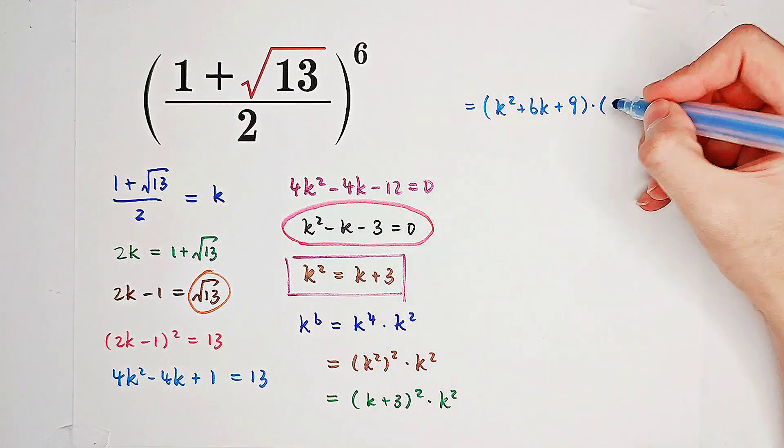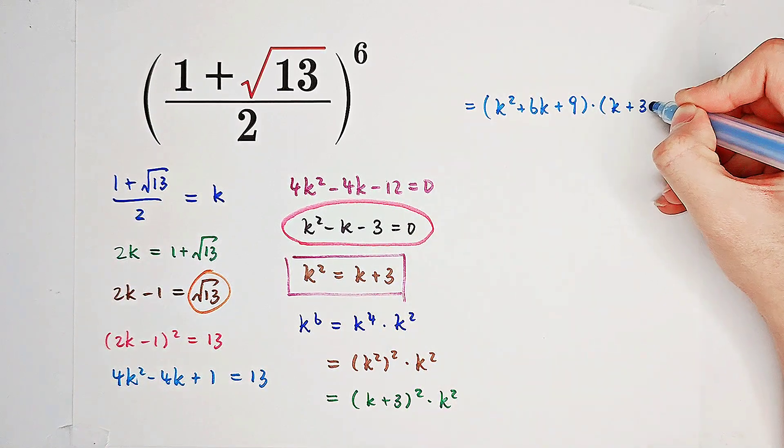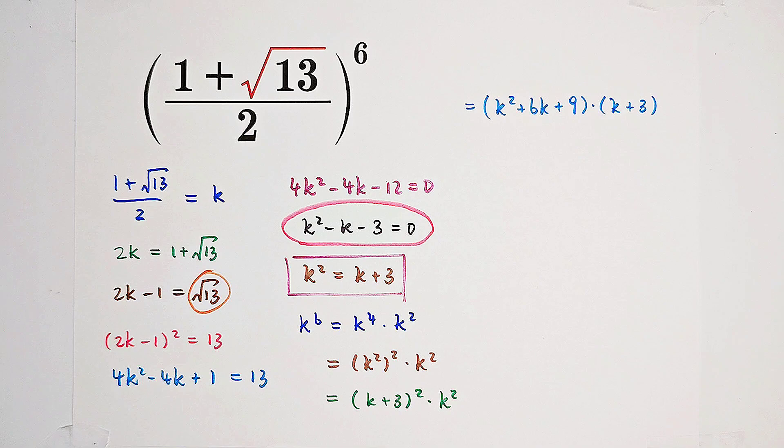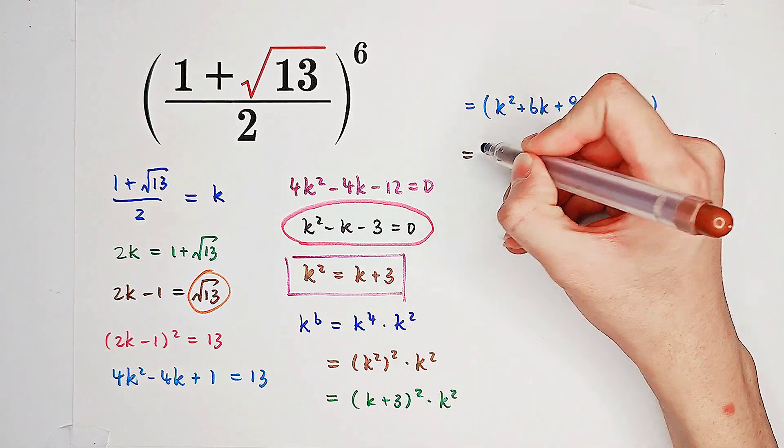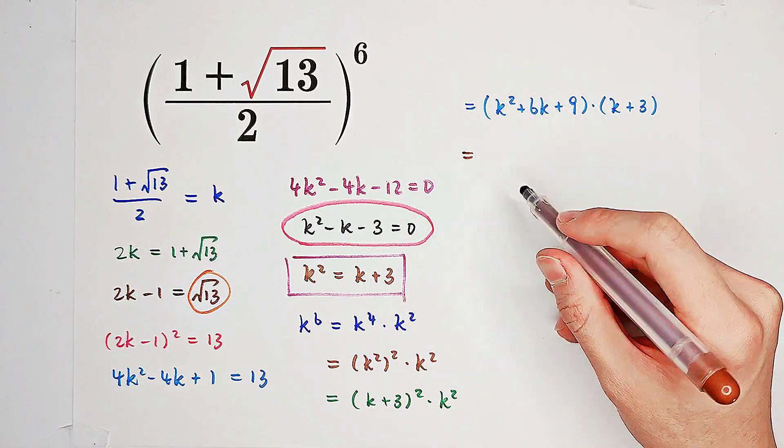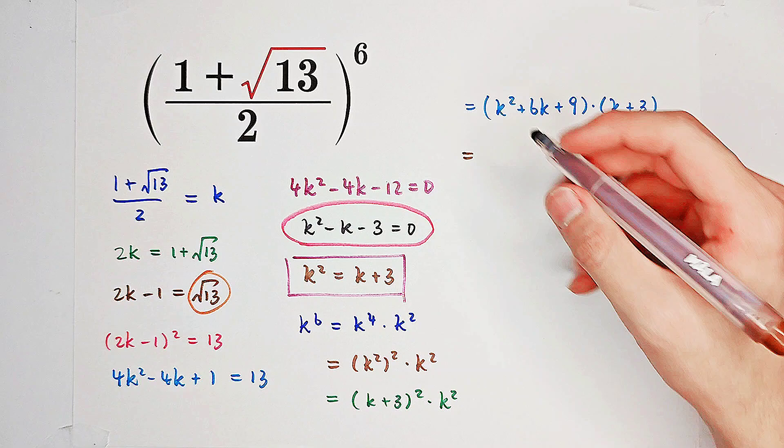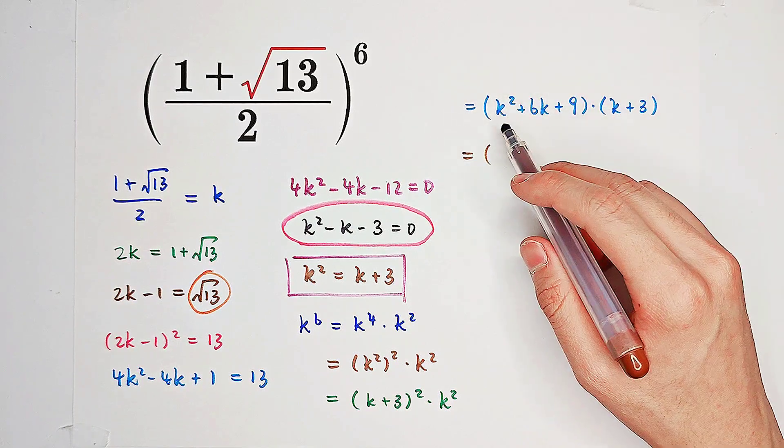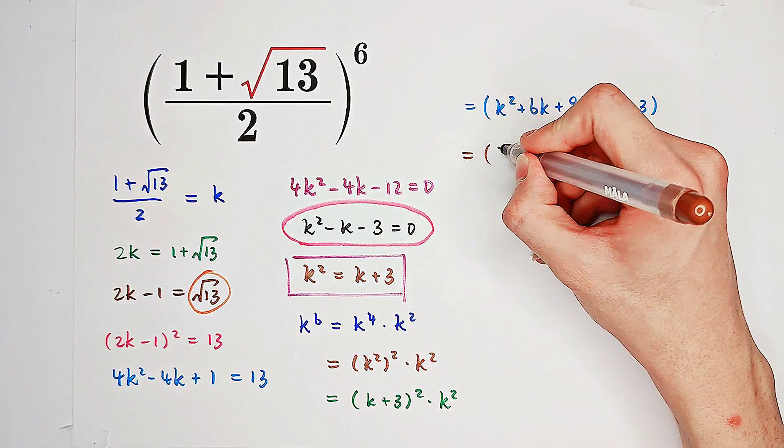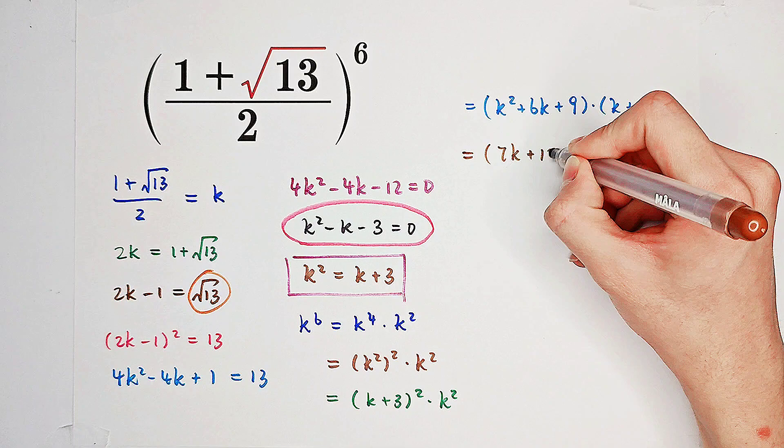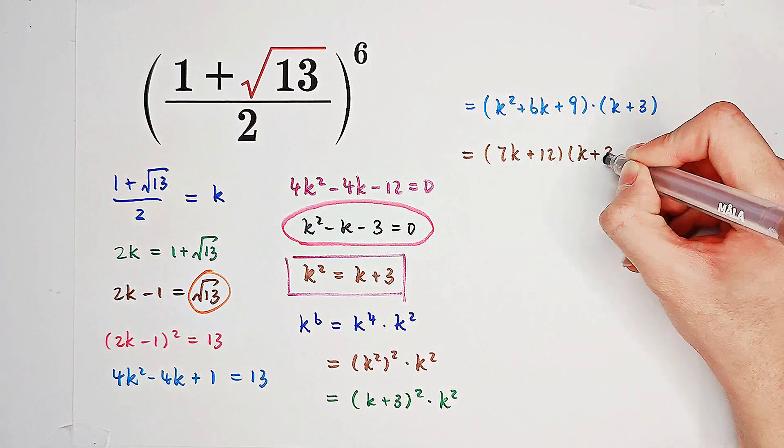What is it? It is k plus 3. Look, k squared is k plus 3. So k plus 3 plus 6k plus 9 is 7k plus 12. And then times k plus 3.